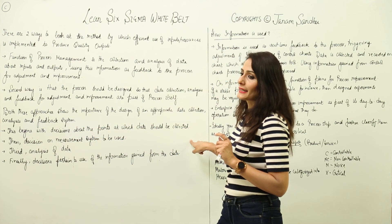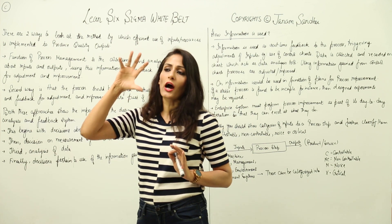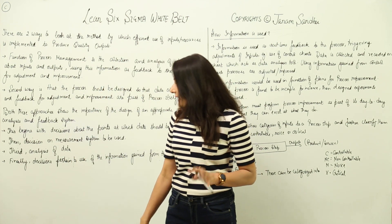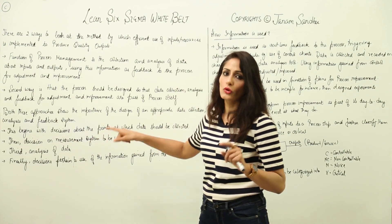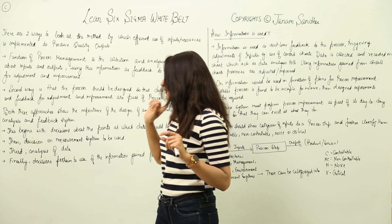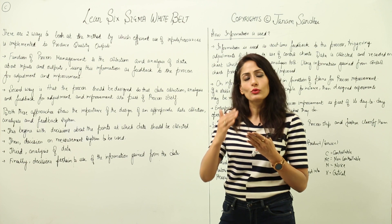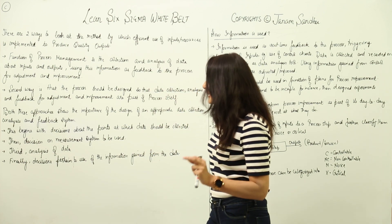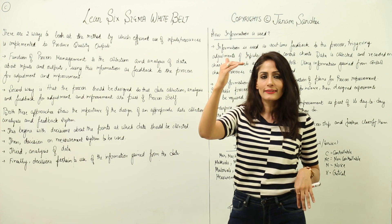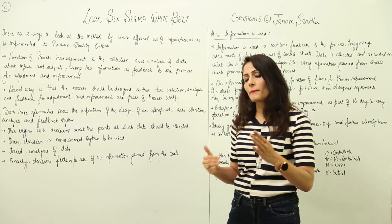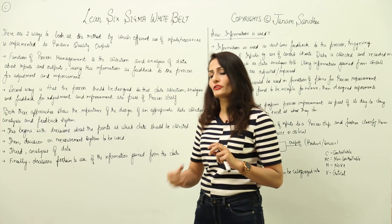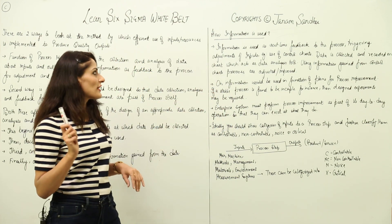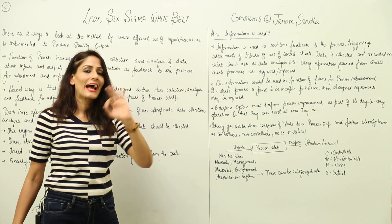Everything begins with decisions about the points at which data should be collected — the team needs to identify which critical points have the most value to the process. Then we decide on the measurement system to be used so we can understand the data. Then we decide what kind of analysis tools to use so we can apply the information properly. Finally, decisions pertain to the use of the information — now that we have collected, measured, and analyzed the data, how do we use the results to enhance our processes?